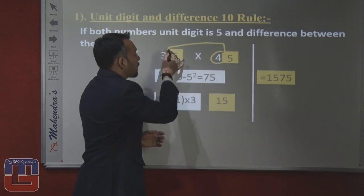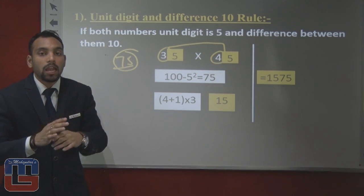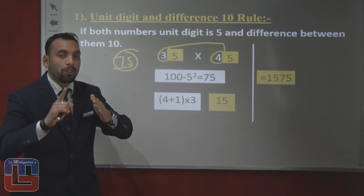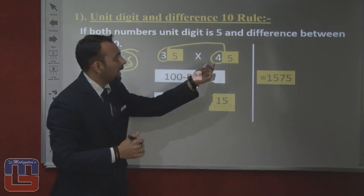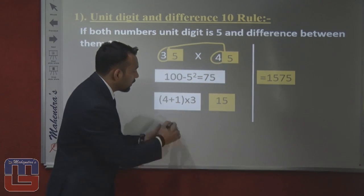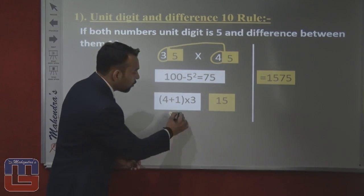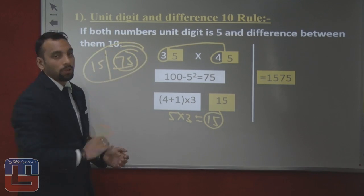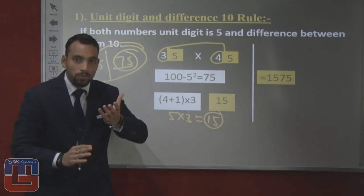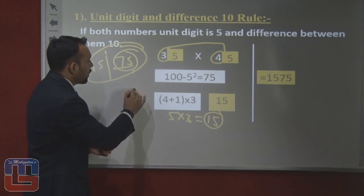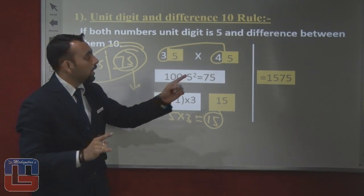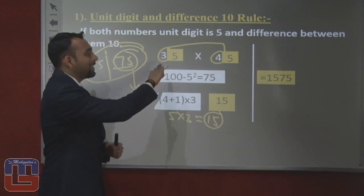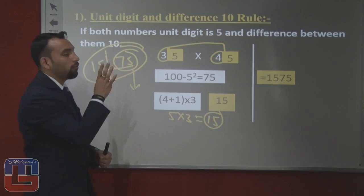Now for 35 into 45, look at the tens digits: 3 and 4. Which one is bigger? 4 is greater than 3. So we add 1 to the bigger number: 4 plus 1 equals 5. Then multiply 5 by 3 to get 15. So our answer will be 1575. Remember: 75 always comes, then find which tens digit is greater, add 1 to it, and multiply by the smaller tens digit.